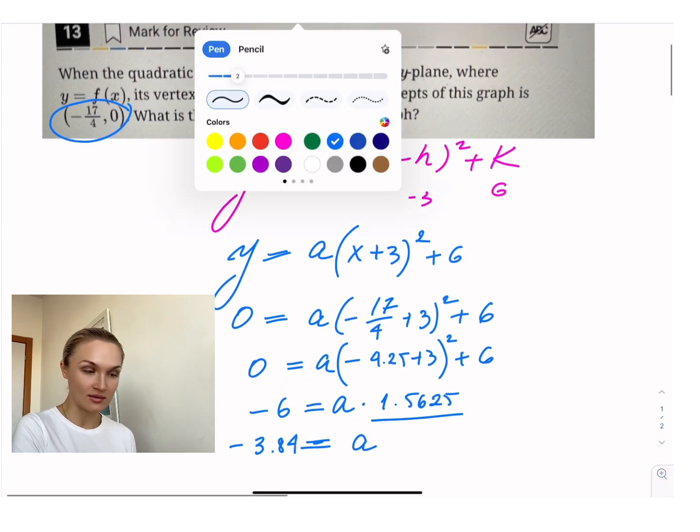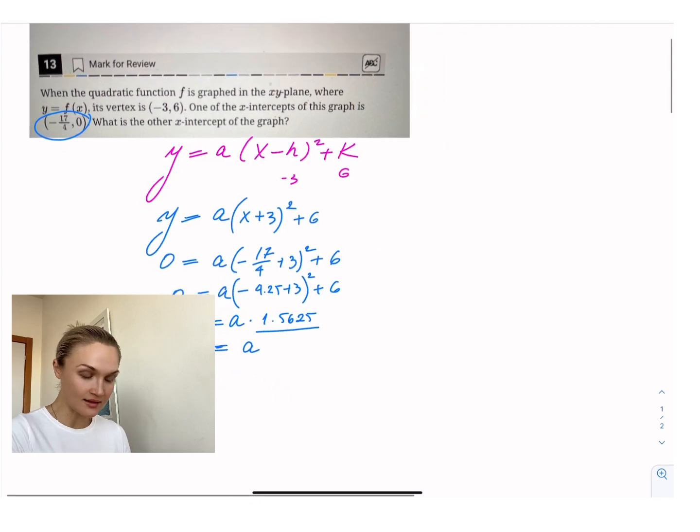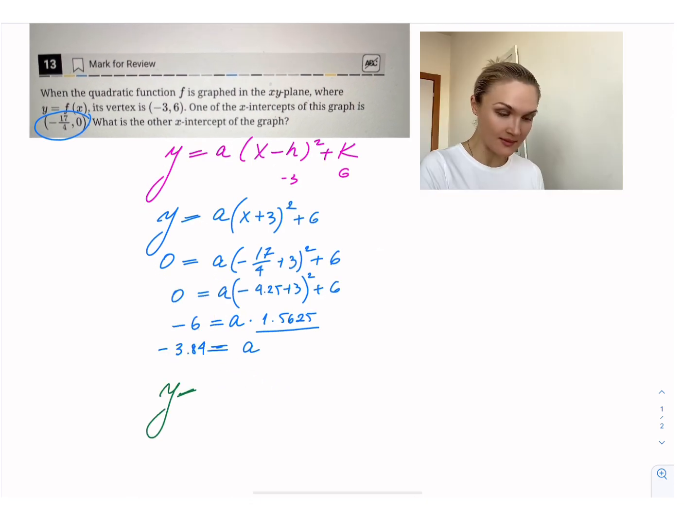So your final equation, I know, looks ugly, but your final equation is y equals negative 3.84(x plus three) squared plus six.